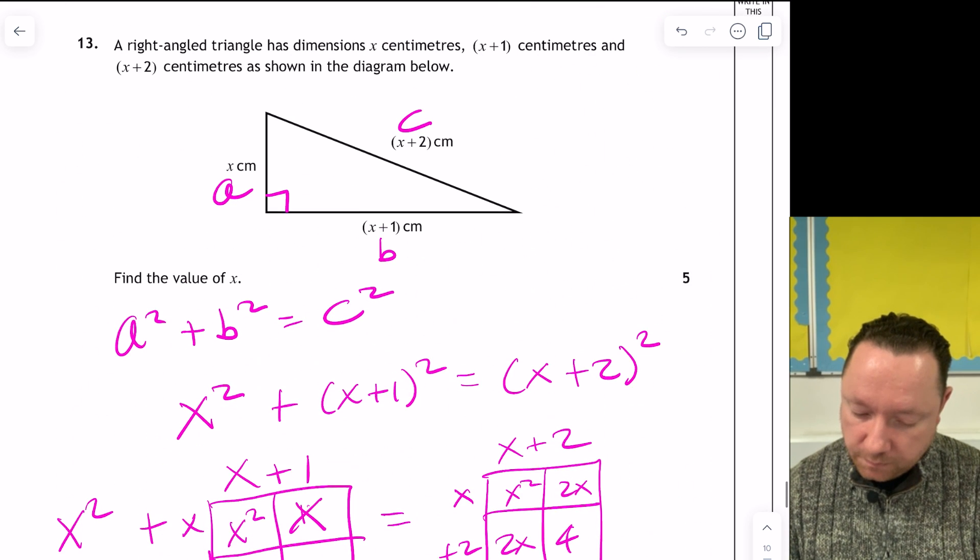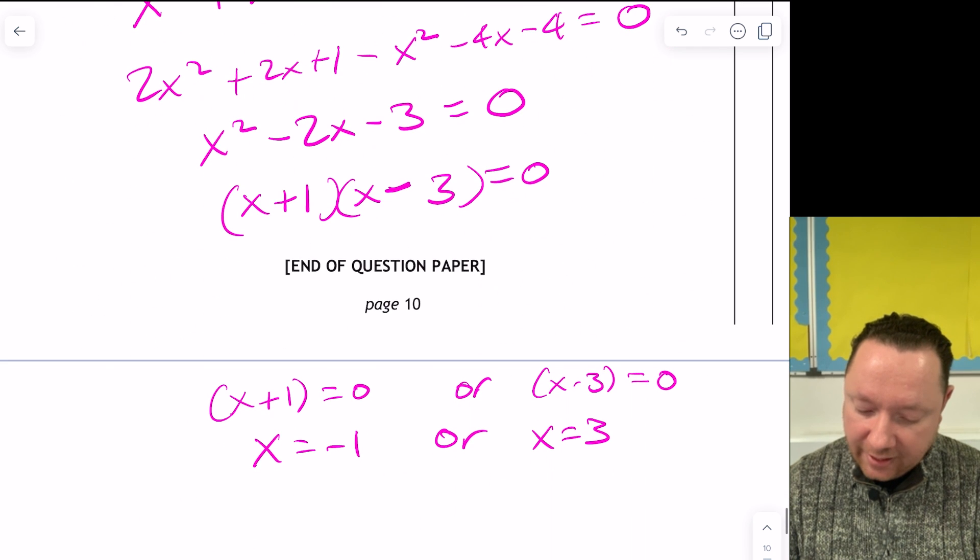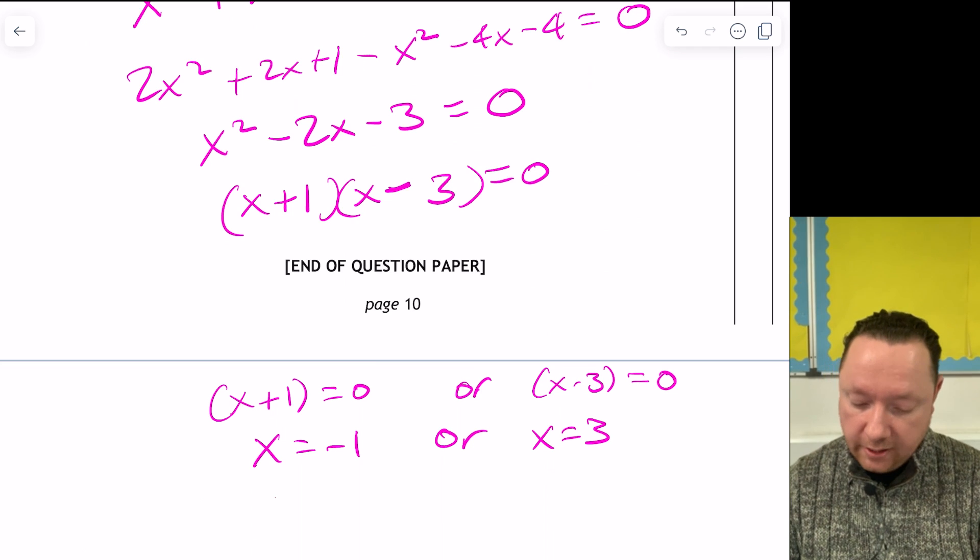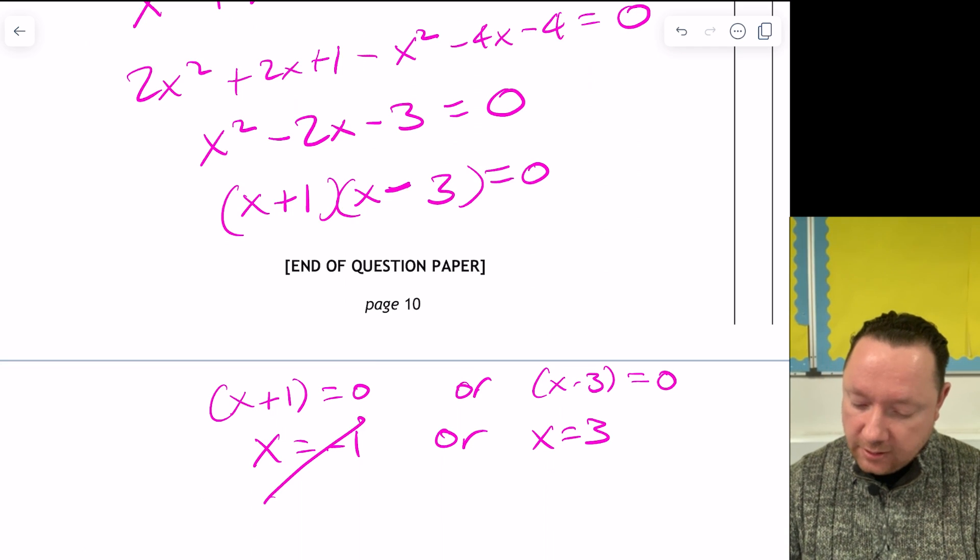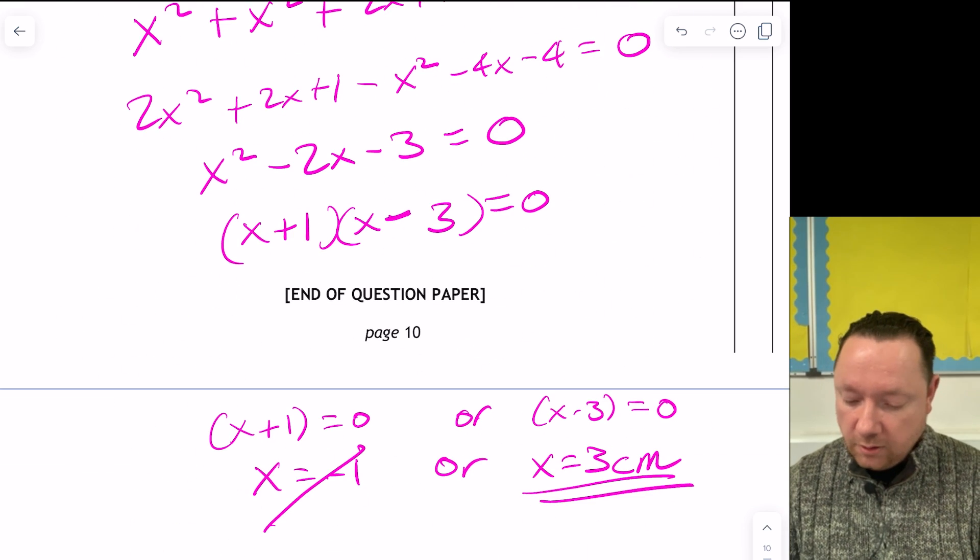Now, these were centimetres. So I cannot actually have a negative 1. So although we've got two answers, because it's a quadratic, we can eliminate that one and say the answer is x equals 3 centimetres, because it is centimetres.